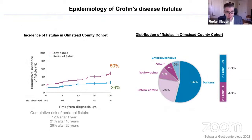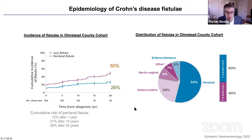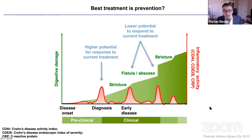The epidemiology has been elucidated with a lot of data from the Mayo Clinic. In the Olmstead County cohort, in Crohn's disease patients over 20 years, 50% develop any type of fistula, and about half of them are perianal fistulas. So this is a big problem for our patients with Crohn's disease.